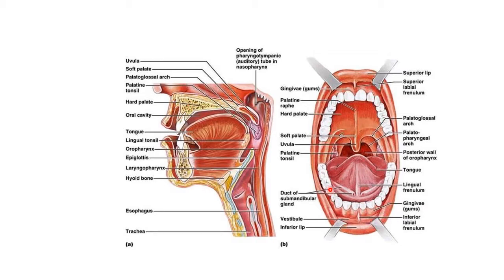The oral cavity extends from the lips to the oropharyngeal isthmus. The oropharyngeal isthmus is the junction of the mouth with the pharynx. Beyond that is the pharynx. The oropharyngeal isthmus is bounded above by the soft palate, below by the posterior one-third of the tongue, and laterally by the palatoglossal arches on either side.